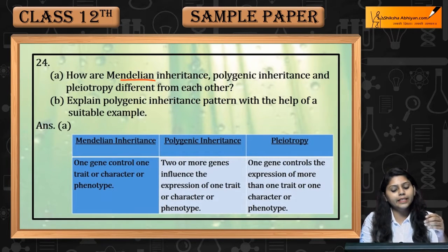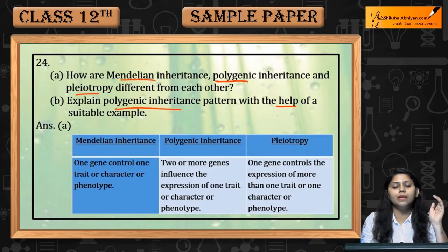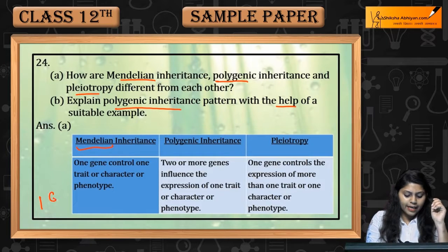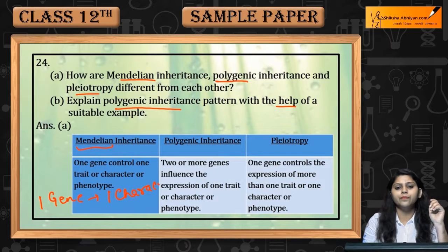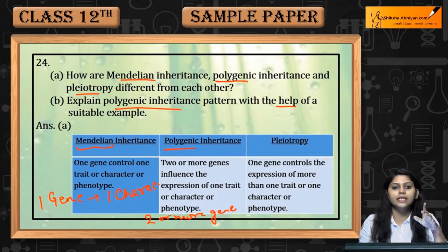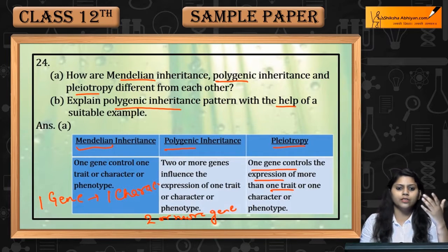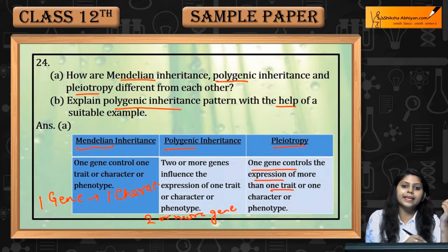How are Mendelian Inheritance, Polygenic Inheritance and Pleiotropy different from each other? In Mendelian Inheritance, one gene controls any one character, trait and phenotype. In case of Polygenic Inheritance, two or more genes are required to express one or single trait. In Pleiotropy, one gene controls expression of more than one trait or character or phenotype. These are their differences.